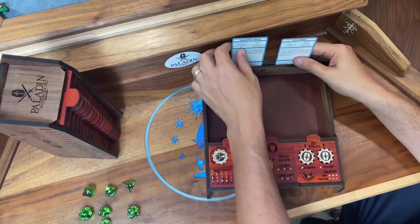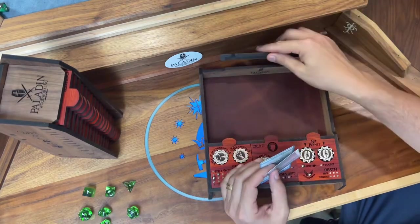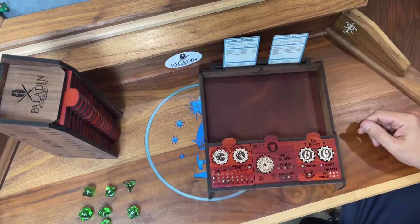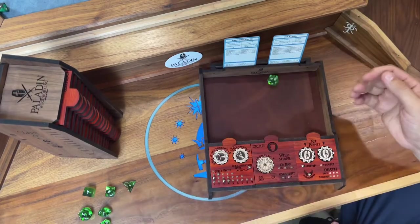We've got that card holder which is magnetic and removable if you don't want to have it on there. It holds cards at a very easy-to-read angle for the player. We've got a leather rolling tray.